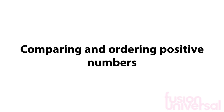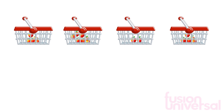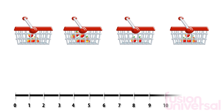We often need to arrange numbers to show how they compare in size with each other. This is called ordering. We can write the numbers so that they get larger, or we can write the numbers so they get smaller.